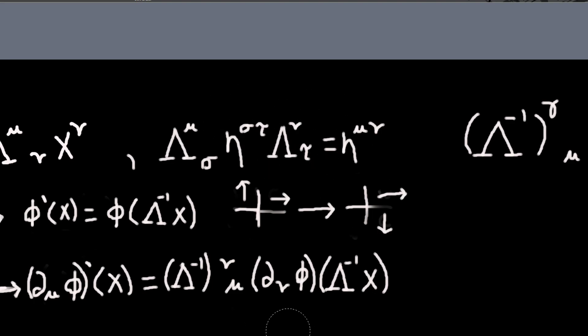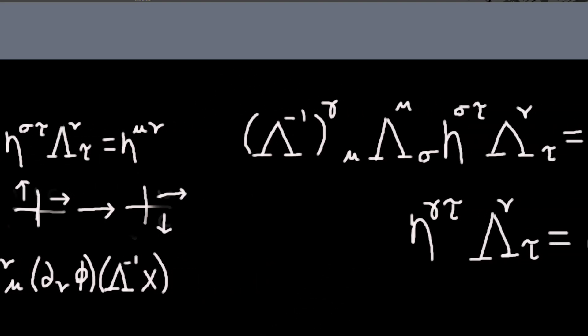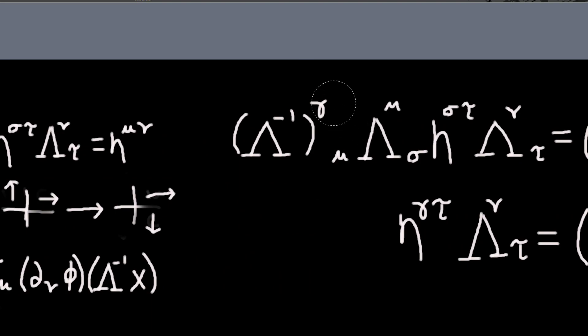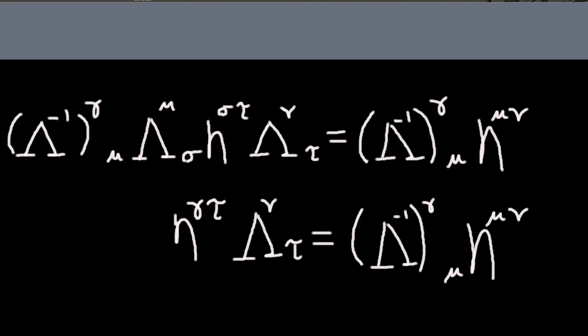So starting from this, if I multiply on the left both sides of this equation by an inverse of lambda, so basically lambda gamma mu I've called it. So I do this, then I can, so this is an inverse times the thing. So this will be an identity matrix, but the identity in index notation is just Kronecker delta.